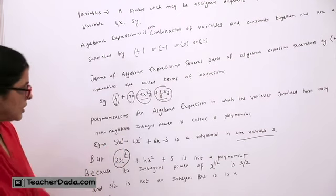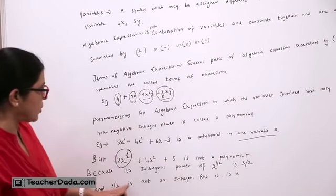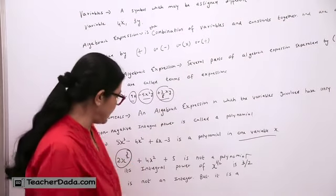So this is termed as polynomial. Now its integral power of X raised to 3 upon 2 is 3 upon 2, and 3 upon 2 is not an integer but it is a fraction.